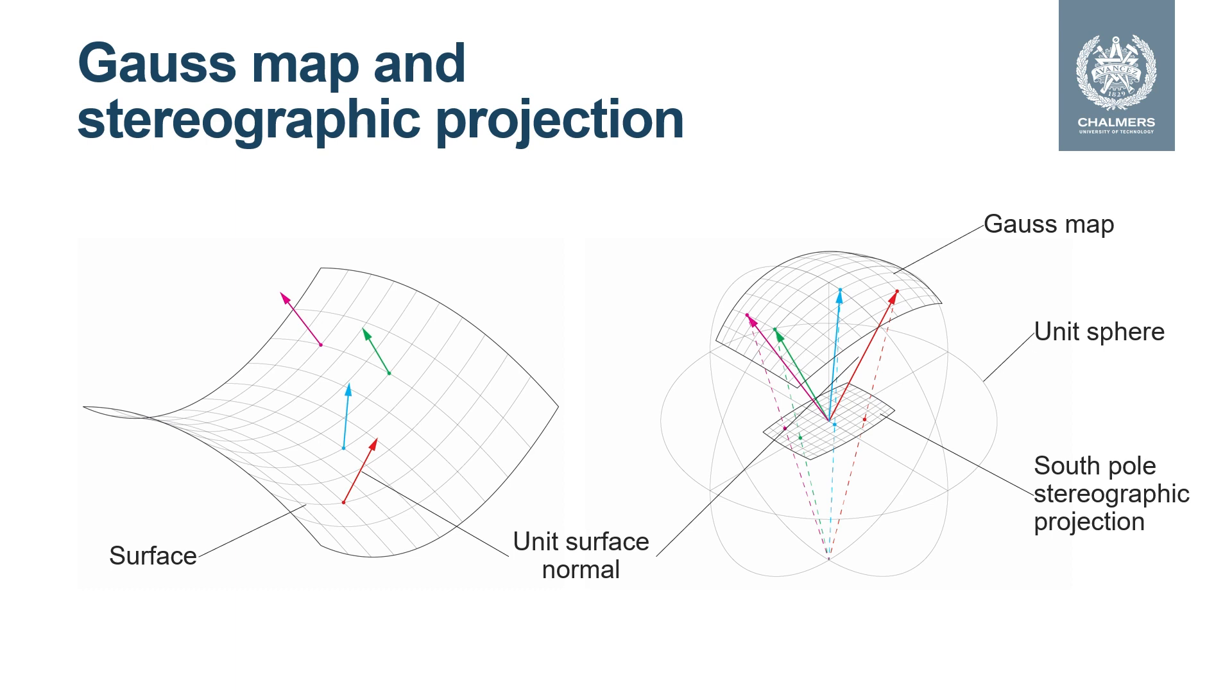Any surface can be mapped to the unit sphere using the Gauss map. The map registers the surface unit normal of a point onto the unit sphere. We may then project the image under the Gauss map onto the horizontal plane using stereographic projection. The points on the plane are given by the intersection of the plane and the line through the point on the Gauss map and the focal point on the sphere. In this picture we have used the south pole for our projection.